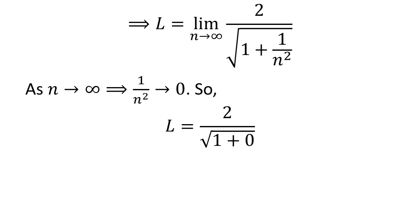We know as n approaches infinity, 1 upon n squared approaches 0, so L equals 2 upon square root of 1 plus 0. Further simplification gives us L equals 2.